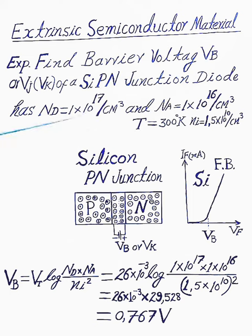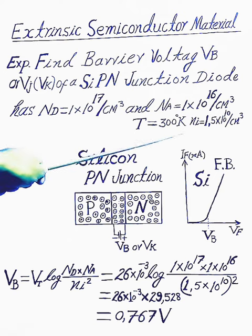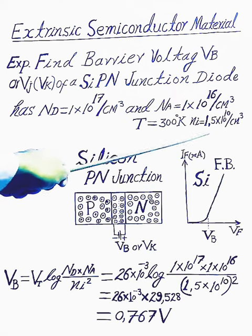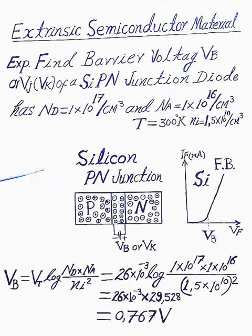Concentration of intrinsic electrons Ni equal to 1.5 multiplied by 10 raised to the power 10 per cm³. The formula for VB equal to VT log Nd multiplied by Na divided by Ni square. We are putting all values.